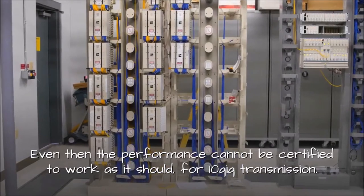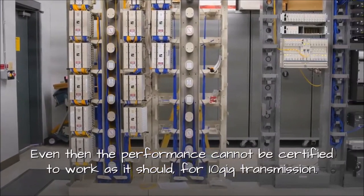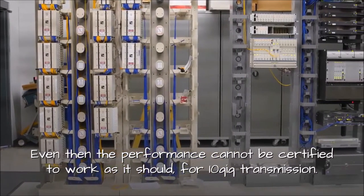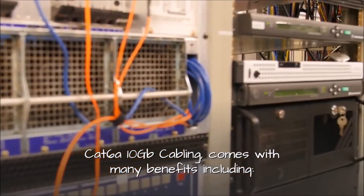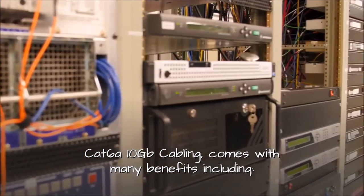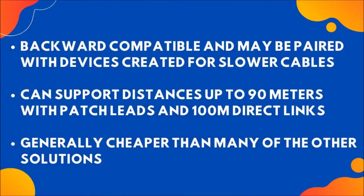Even then the performance cannot be certified to work as it should for 10 Gig transmission. CAT 6A 10 Gigabit cabling comes with many benefits including: backward compatible and may be paired with devices created for slower cables; can support distances up to 90 meters with patch leads and 100 meters for direct links; and is generally cheaper than many of the other solutions.